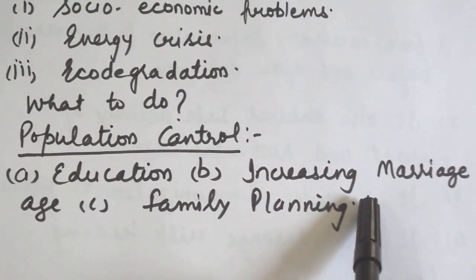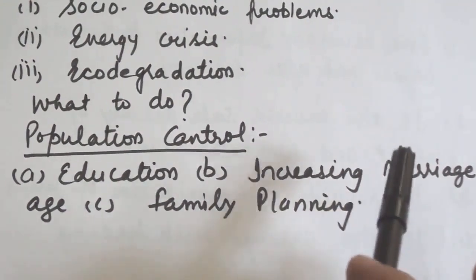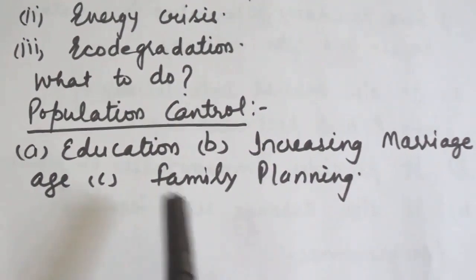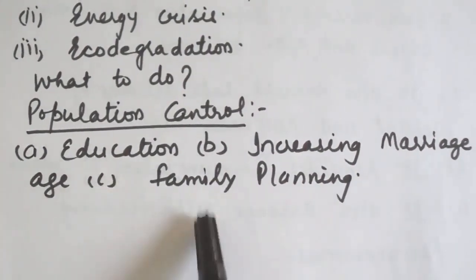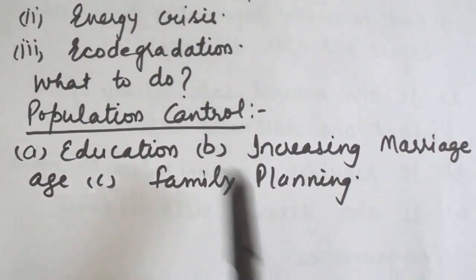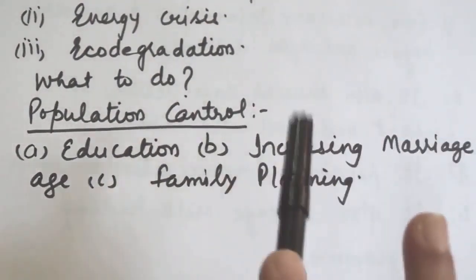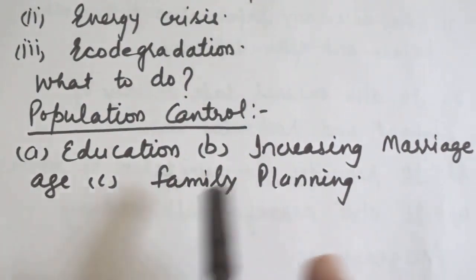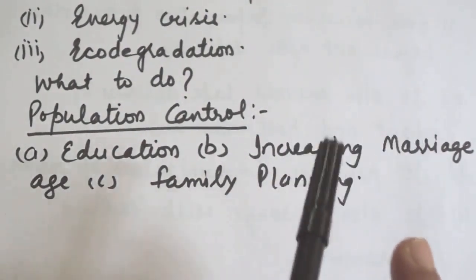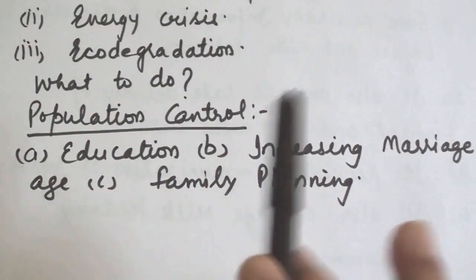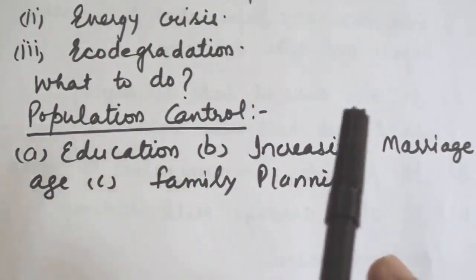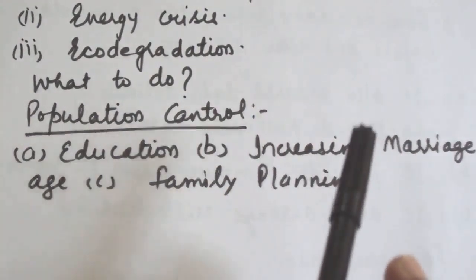Next is increasing marriageable age. At present, the marriageable age is 18 for females and 21 for males. If the marriageable age is reasonably increased, it can definitely help to check the growth of population. Regarding family planning, the Government of India attempted to check high birth rates and started a voluntary approach towards birth control methods. This program initially failed as people were traditionally resistant to birth control methods.